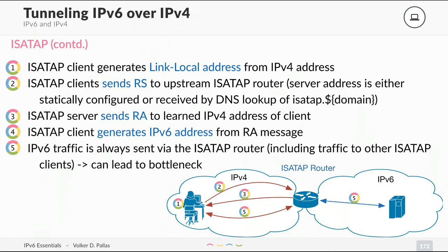The client can then — based on this router advertisement, just like in a real IPv6 network — generate an IPv6 address, because it knows the prefix and what else the router supplied. From there, with an IPv6 public address and a known ISATAP router as gateway, all traffic can be sent to this router encapsulated in IPv4. The problem is this can create a bottleneck, since all traffic always goes through this one router, regardless of how many internet connections you have.